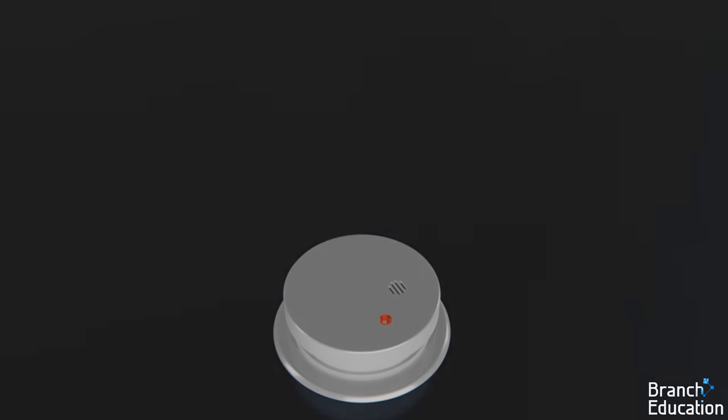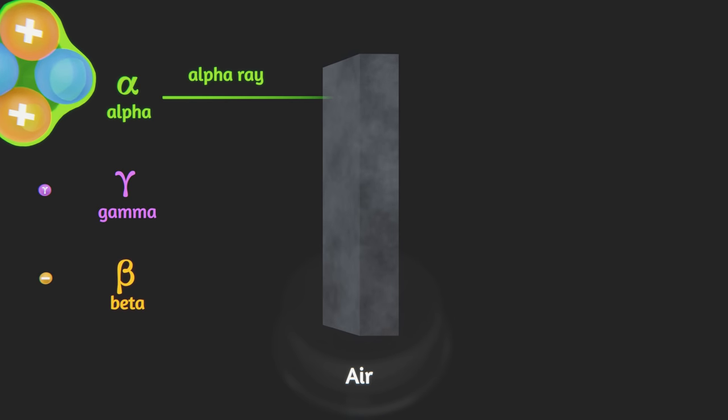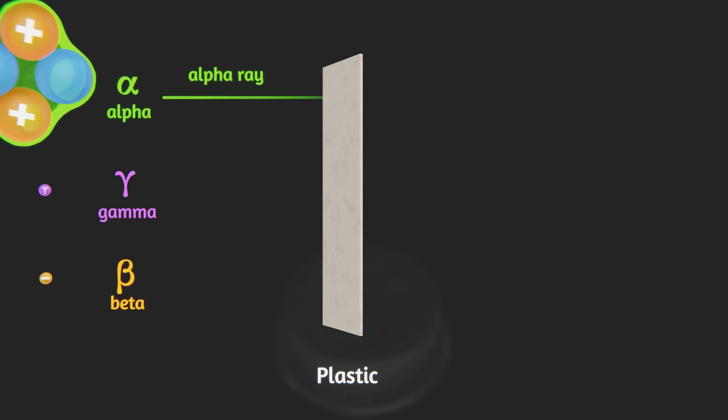Additionally, although alpha particles are ejected with a tremendous amount of energy, they are in fact stopped by practically anything. This is because they're helium nuclei, which are much larger than either the beta or gamma particles. Just a few centimeters of air, a thin piece of plastic, or a few layers of skin cells are enough to stop alpha particles.